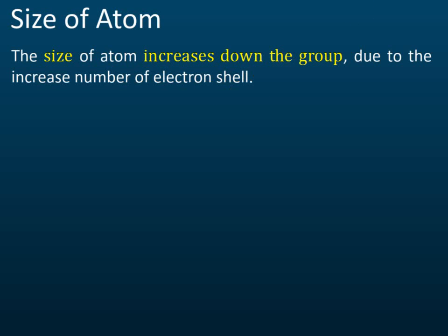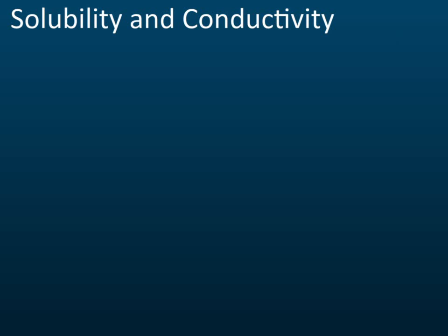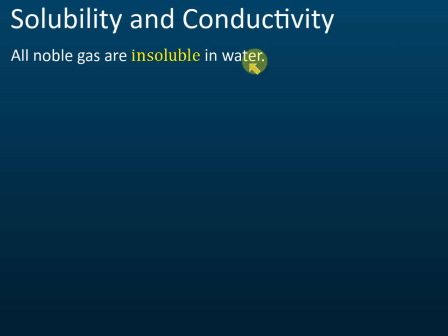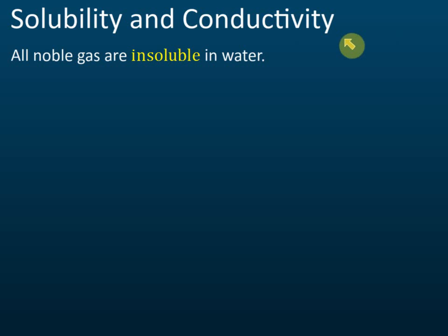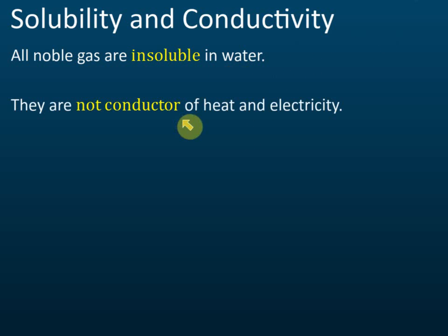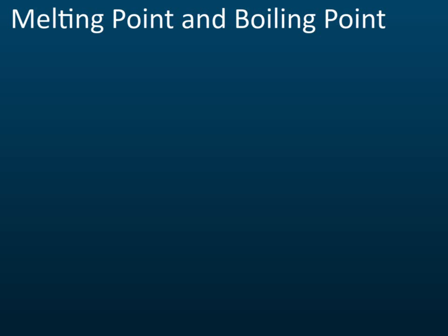Noble gases are non-metals, so they are very poor conductors. They are insoluble in water — unlike oxygen or carbon dioxide, which are soluble in water. Noble gases are not conductors of heat and electricity. The melting points and boiling points increase down the group, from the first to the last element.